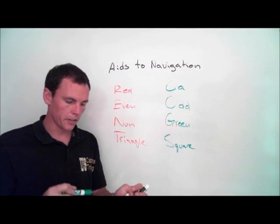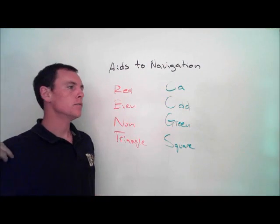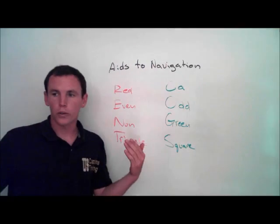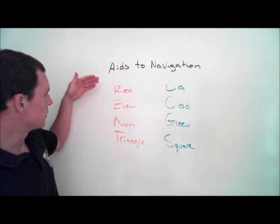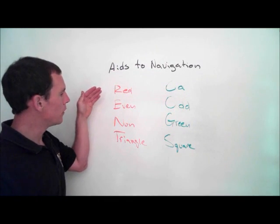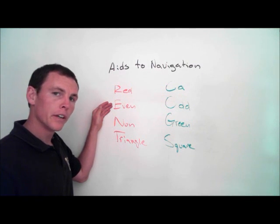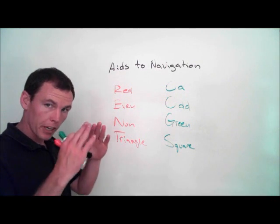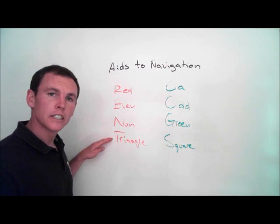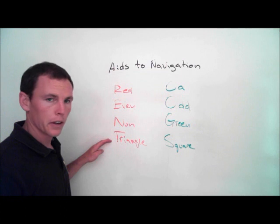Let me explain this a little further. When you enter from sea toward a port, the red ones are always on your right side. They're red in color. If they're numbered, they have even numbers on them. If it's an unlighted buoy, it is a nun with a conical top. If it's a day marker, it's a triangle. So Red, Even, Nun, Triangle describes starboard hand marks.